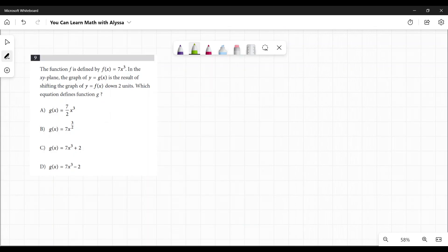The function f is defined by f(x) = 7x³. In the xy-plane, the graph of y = g(x) is the result of shifting the graph of y = f(x) down two units. Which equation defines function g? Man, they love their verbiage. So many words for a math test, right? Okay, 7x³.